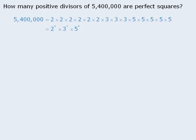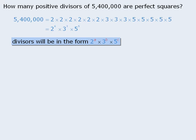Now since the prime factorization of 5.4 million consists solely of 2s, 3s, and 5s, the divisors of 5.4 million must be in the form 2 to the power of a times 3 to the power of b times 5 to the power of c.